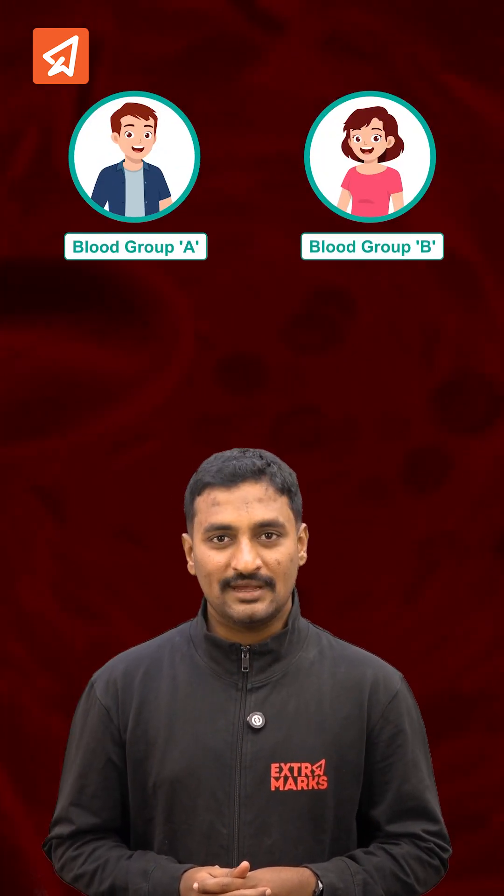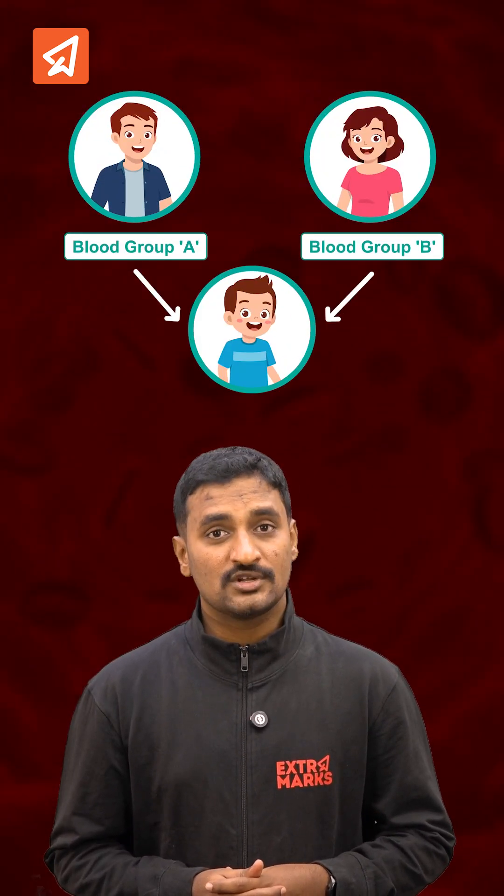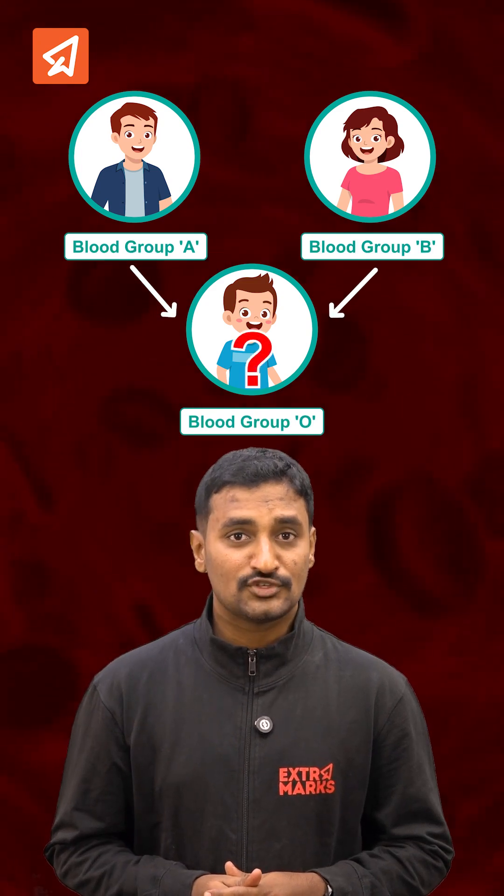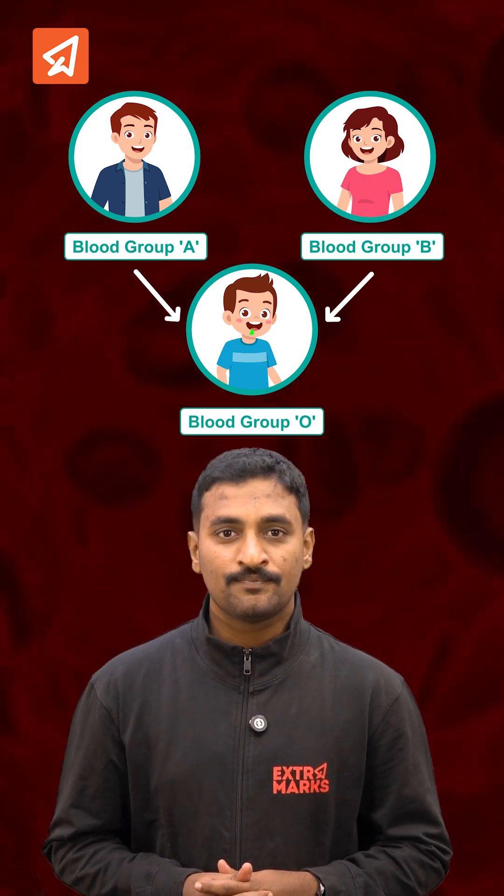Can a father with blood group A and a mother with blood group B produce children with blood group O? Shall we find out?